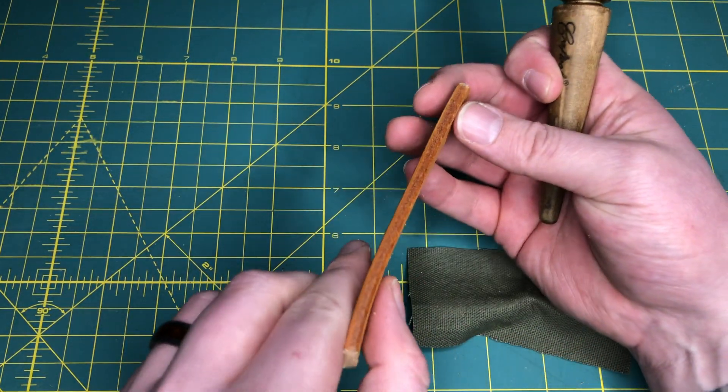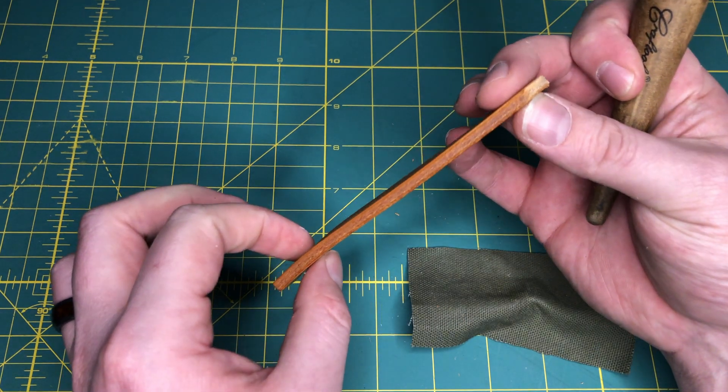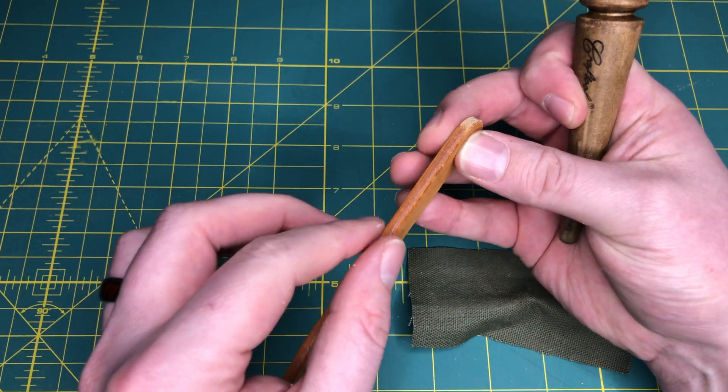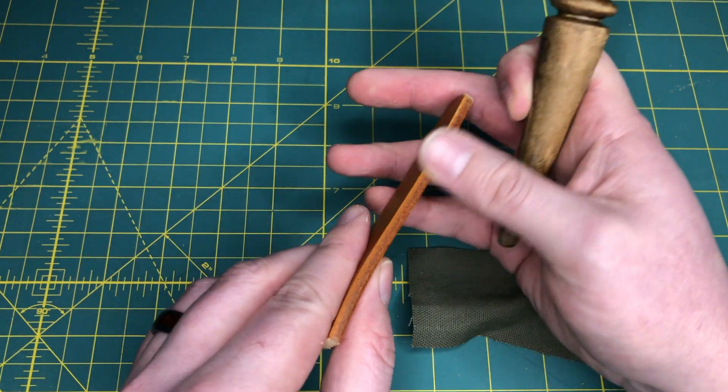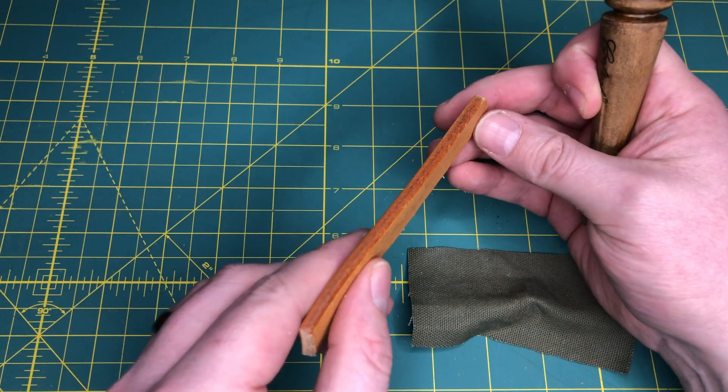Now we have this edge that probably will catch the light. Yep. Nice and smooth. Edges are sealed. You can make this a lot prettier if you want to go to a real high grit sandpaper before you do the burnishing.